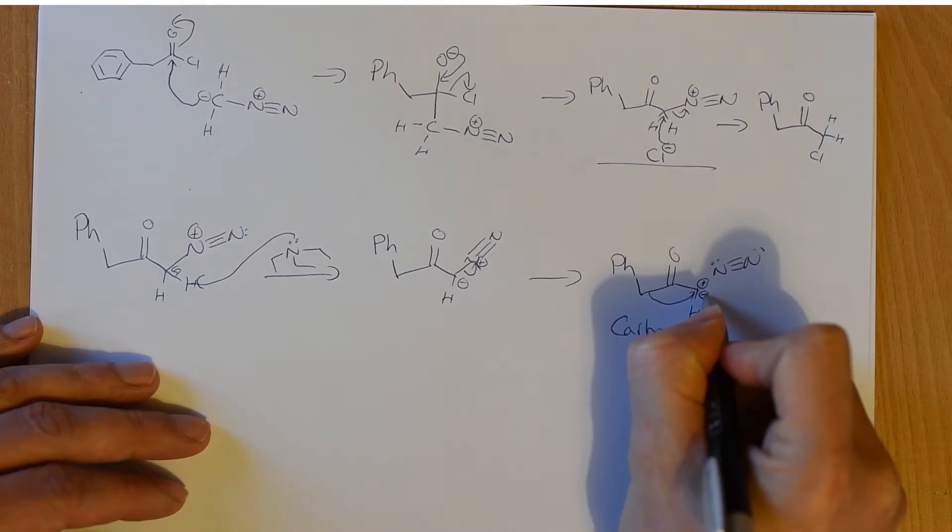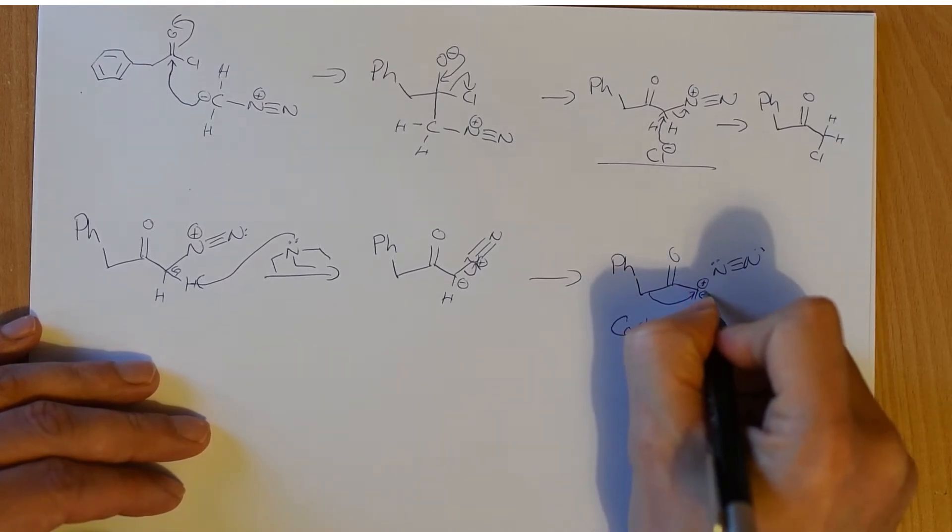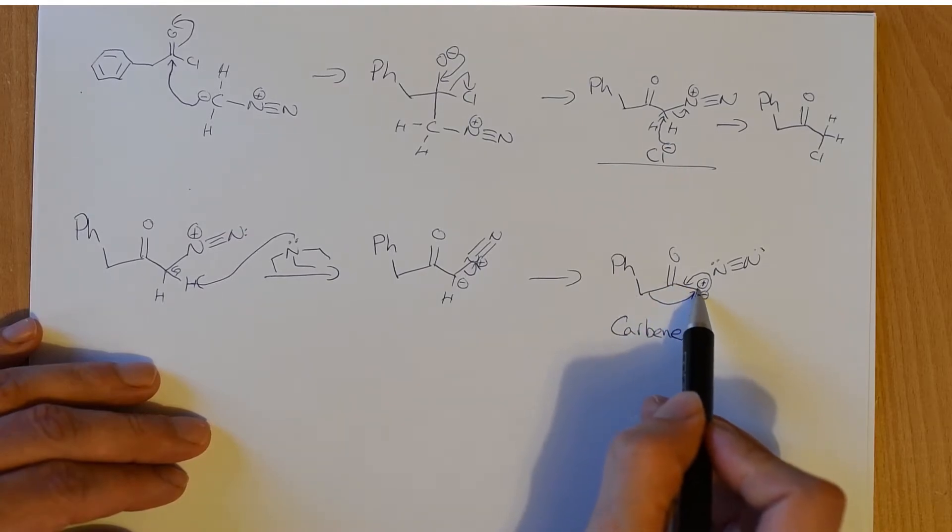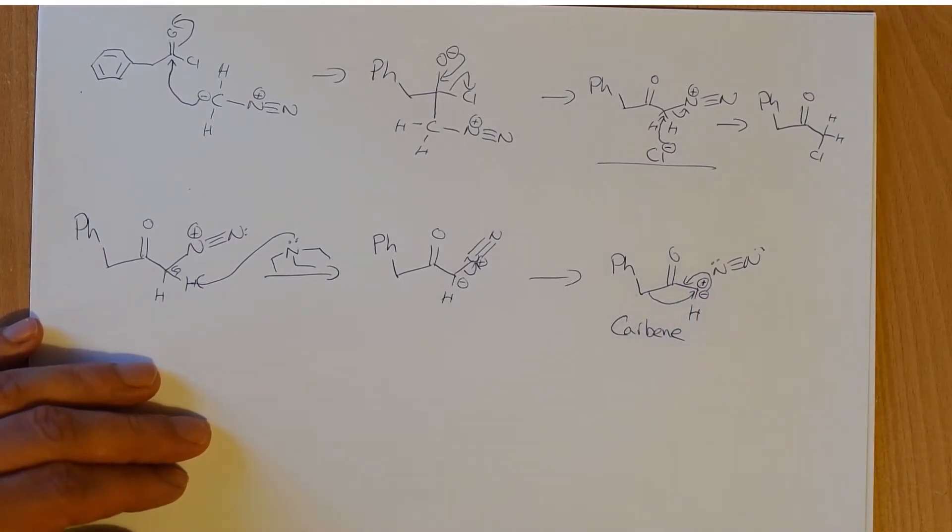And this pair of electrons, that is the negative charge, the lone pair, is going to make a new carbon-carbon bond here. So the carbon in the middle has lost a bond but gained a bond. And this carbon now has two new bonds.